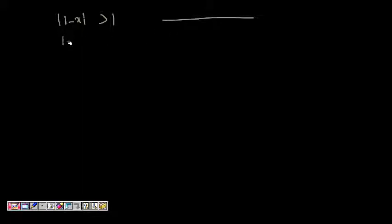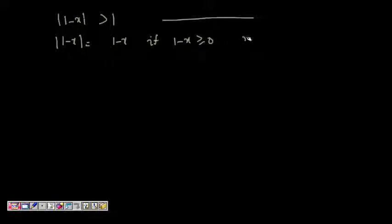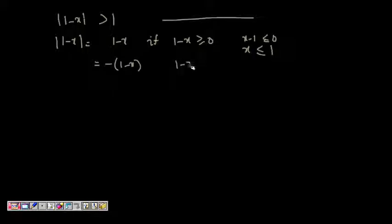So mod of 1 minus x equals 1 minus x if 1 minus x is greater than or equal to 0, i.e., x is less than or equal to 1. And it equals minus of (1 minus x) if 1 minus x is less than 0, i.e., x is greater than 1.